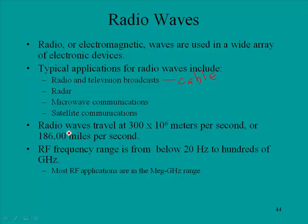That should be 186,000 — there should be another zero there. The RF frequency range technically goes from down around 20 hertz to hundreds of gigahertz. However, most of the applications you see in RF are going to be in the megahertz and gigahertz range.